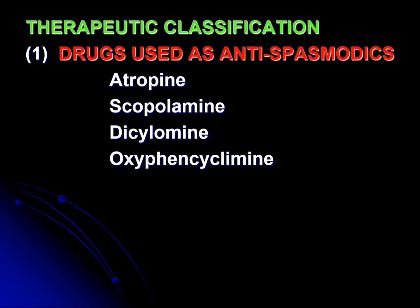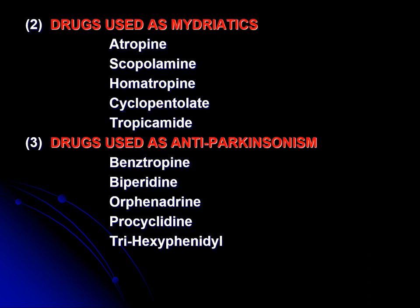The second way of classifying is according to clinical uses, called therapeutic classification. Drugs used as antispasmodics — that means they relieve spasms of different viscera, hollow viscera, GIT, and other smooth muscles — include atropine, scopolamine, dicyclomine, and oxyphencyclamine. Drugs used as mydriatics, that means they cause mydriasis or dilatation of the pupil, include atropine, scopolamine, homatropine, cyclopentolate, and tropicamide.